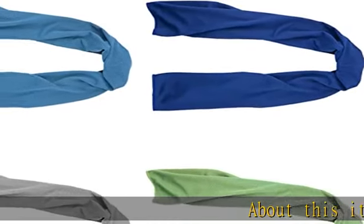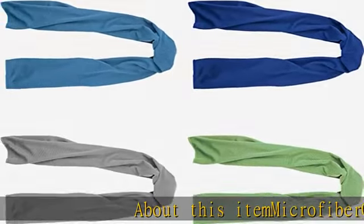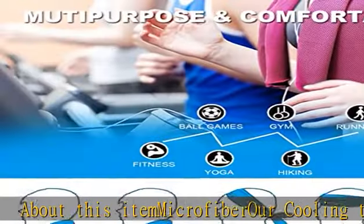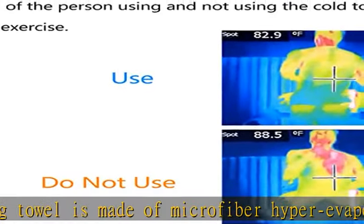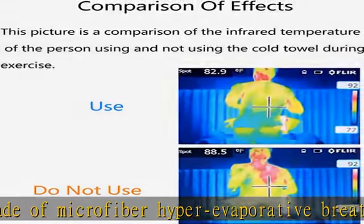This ITA Microfiber cooling towel is made of microfiber hyper evaporative breathable material. It has a soft feel, is super absorbent and breathable. This towel provides physical cooling by the evaporation of water molecules. The cooling towel is different from a simple towel.